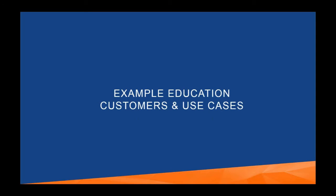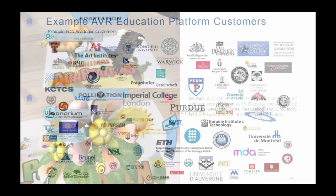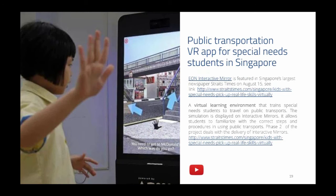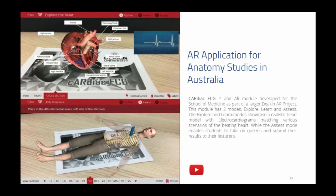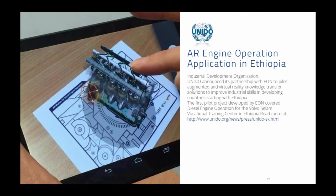Let me share a few concrete educational customer use cases. Among our customers we have high-end institutions like Imperial College, Purdue, ETH in Switzerland, and Carnegie Mellon, but we also work with colleges and K-12 around the globe. Examples include an AR primary school science application, a public transportation VR app for special needs students in Singapore, an immersive history lesson of a Cantonese province in China, an AR anatomy application in Australia, a VR application for flooding emergencies for primary school students, and an AR engine operation application in Ethiopia with United Nations.